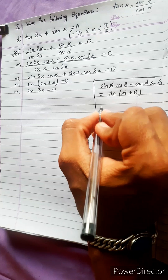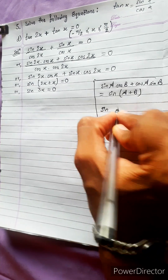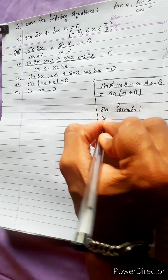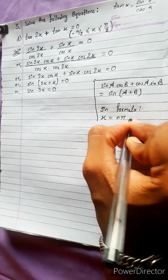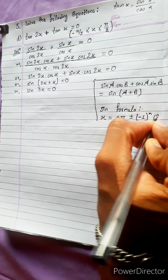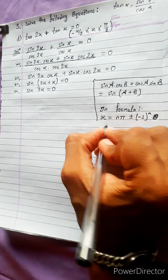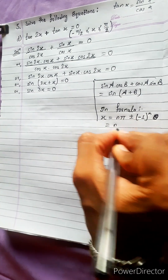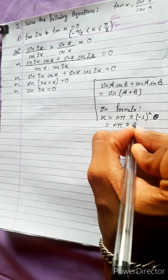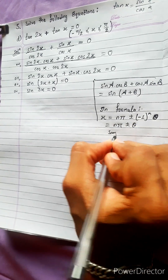Sin goes to the general equation formula: x equals n·π plus or minus (−1)^n·θ. Also, the formula x equals n·π plus or minus θ gives the same result.